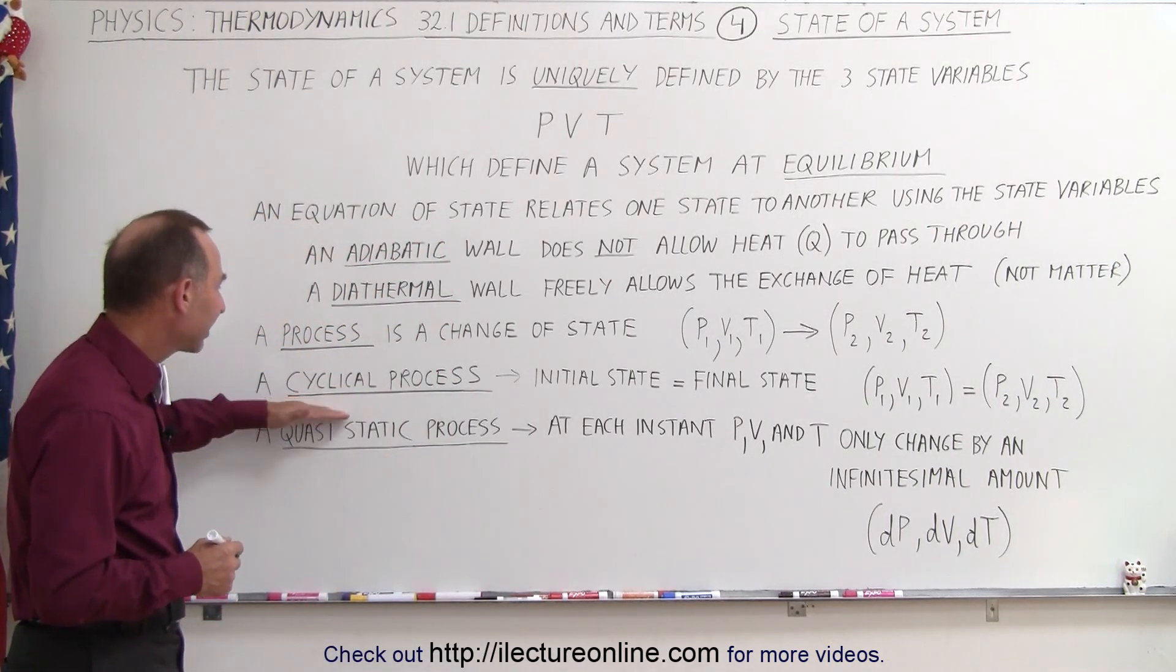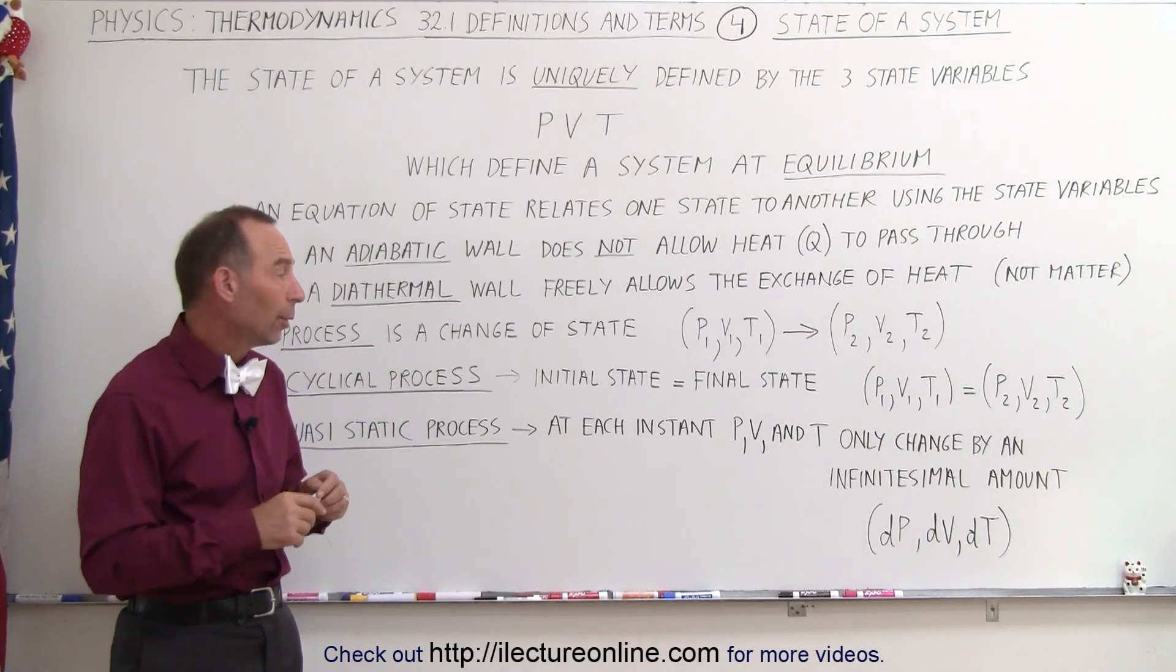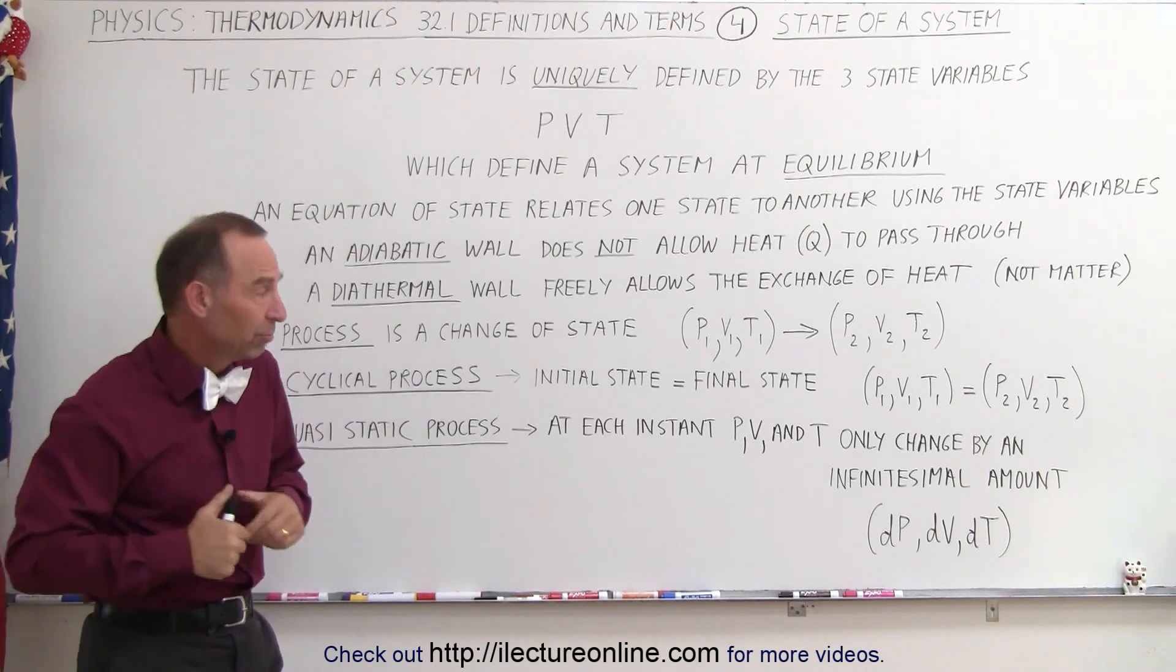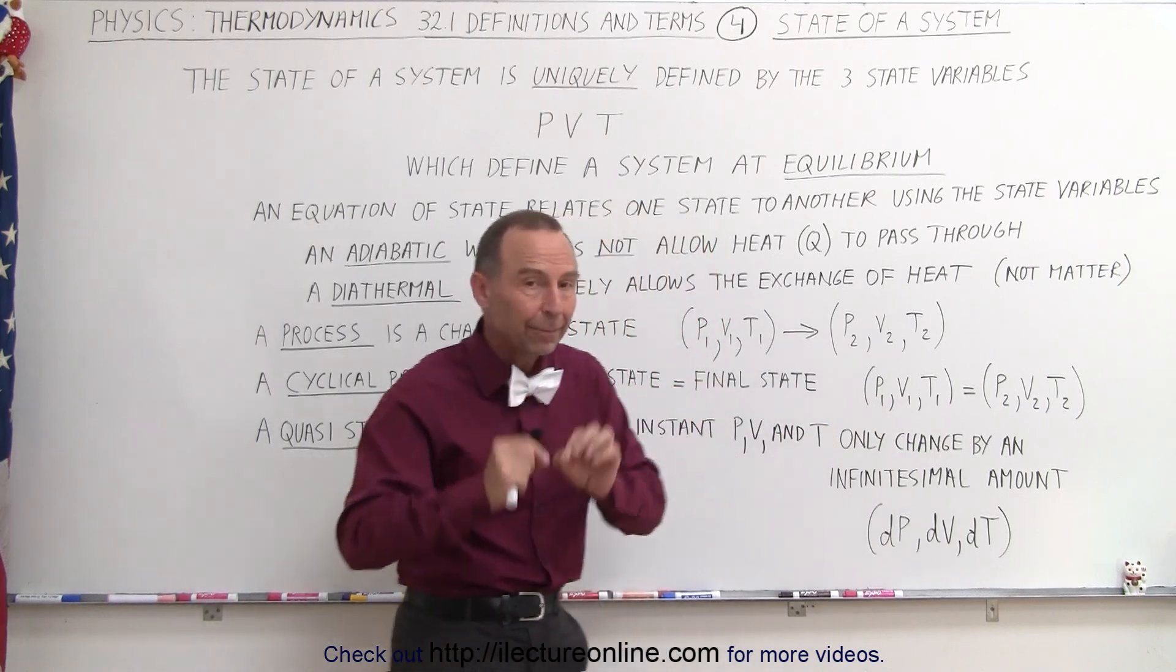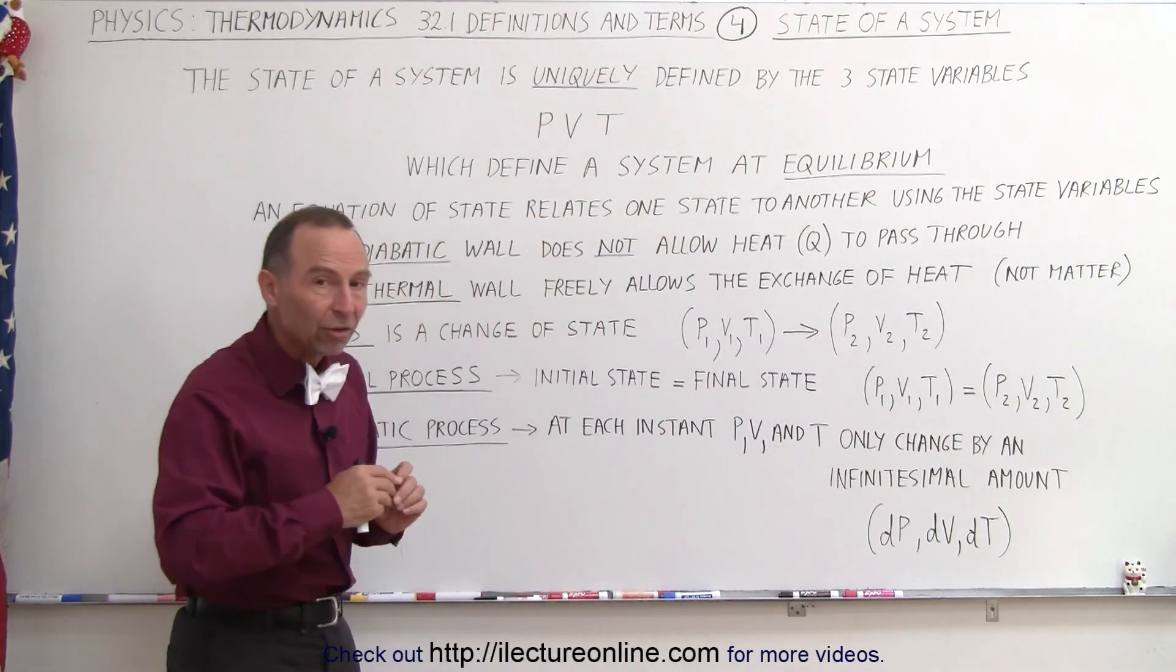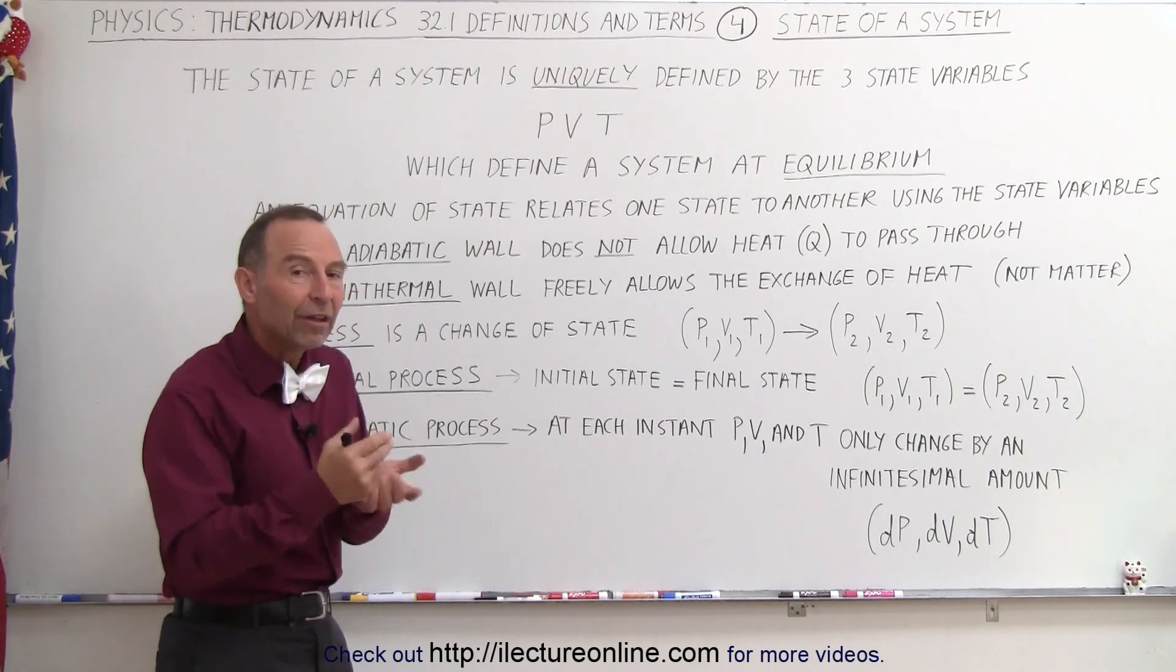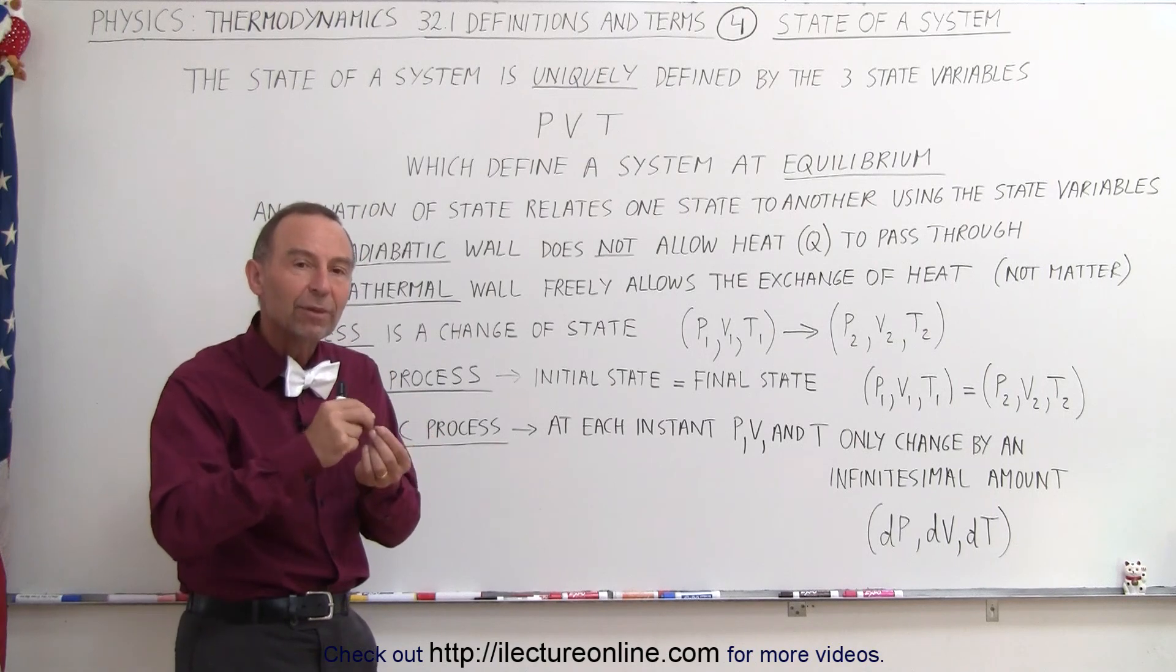Let's talk about a cyclical process. What do we mean by a cyclical process? A cyclical process is when you start at some initial state, state one, where you have pressure, volume, and temperature defining that particular state. Then the state changes, maybe it changes again and again and again, and eventually you end up back with the same pressure, the same volume, and the same temperature.